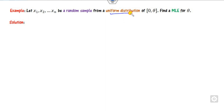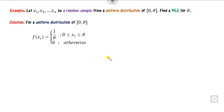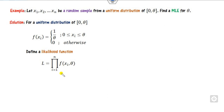If xi follows the uniform distribution, find the MLE of theta. This is the uniform distribution. The PDF of the uniform distribution is 1/(B minus A), so that is 1/theta here. Now you can define the likelihood function by substituting the value, and since it is independent of i, it will be that expression repeated n times.